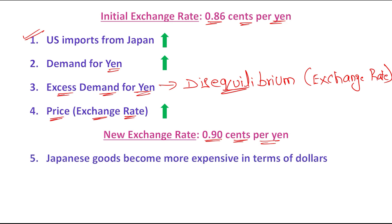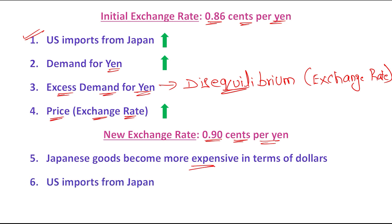That means Japanese goods become more expensive in terms of dollars. Earlier the US had to pay 0.86 cents to purchase 1 yen's worth of goods, and now they will have to pay 0.90 cents. So ultimately Japanese goods have become more expensive, and when they have become more expensive for US citizens, US imports from Japan will be decreased, and ultimately the demand for yen will be decreased.